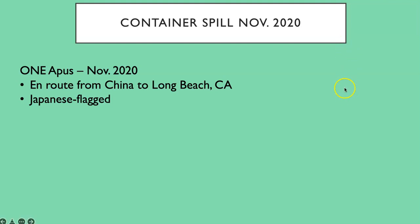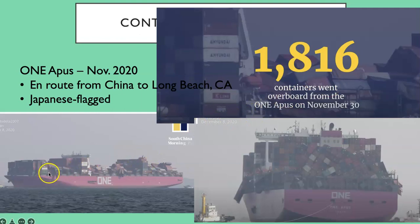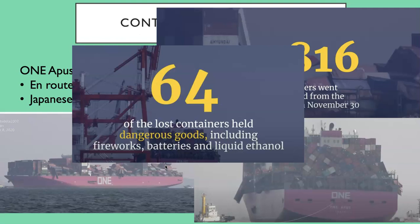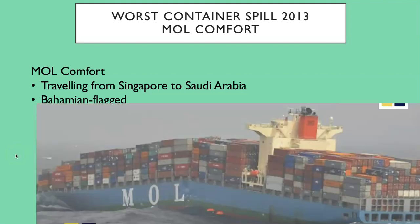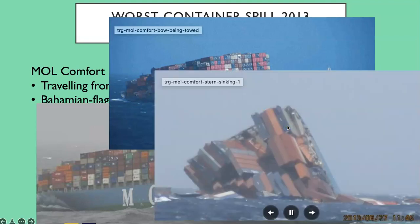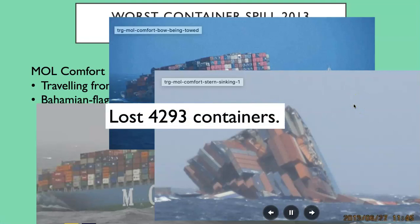The second largest container spill to date occurred in November 2020. This was a ship en route from China to Long Beach, California — Japanese flag means it was registered in Japan. You can see the damage from very extreme winds, waves, and bad weather. The ship lost almost 2,000 containers — large containers that would be pulled by a semi-truck or along a train. 64 of the containers had dangerous goods, including fireworks, batteries, and liquid ethanol. This spill was second only to the worst spill so far, in 2013, involving a ship called the Mo Comfort traveling from Singapore to Saudi Arabia. That ship actually broke in half, and that event lost 4,293 containers.